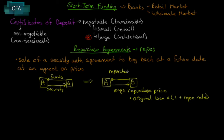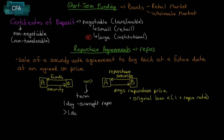The interest rate is called the repo rate, and the return of the security is called the repurchase agreement. A sells the security to B on the condition that A will repurchase it at the end of the term for the original price plus the repo rate. If the term is one day it's called an overnight repo; anything greater than one day is called a term repo. If the loan runs to the maturity of the security itself, it's called a repo to maturity.